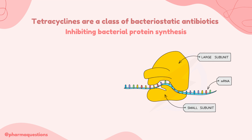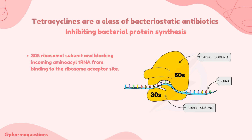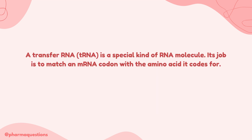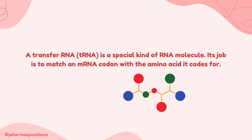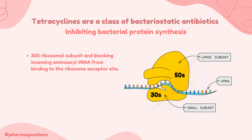Prokaryotic cells contain two types of ribosomal units: the 30s and the 50s units. Tetracyclines bind to the 30s bacterial ribosomal subunit and block tRNA from binding to its acetyl site. tRNA is a special kind of RNA molecule whose job is to match the mRNA codon with the amino acid it codes for. When this is inhibited, proteins can no longer be formed, thus affecting how the bacteria multiplies or replicates.